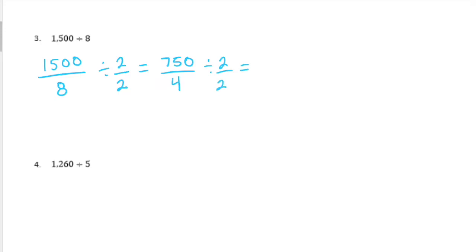So 750 divided by 2. Well, 700 divided by 2 would be 350. And 50 divided by 2 would be 25. So 350 plus 25 is 375. 4 divided by 2 is 2. And so now I just need to divide that in half.